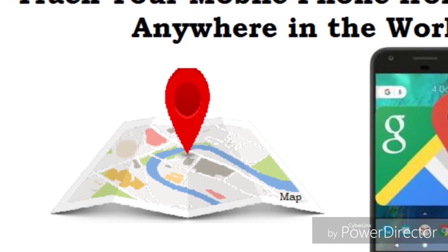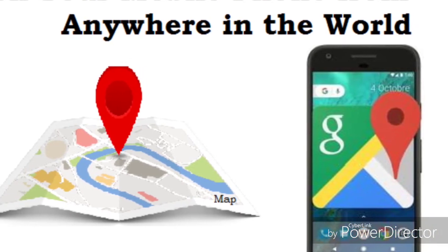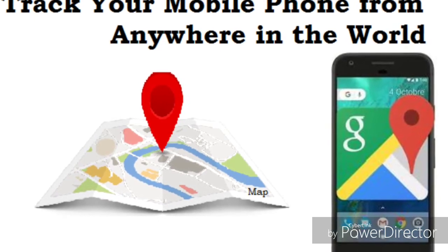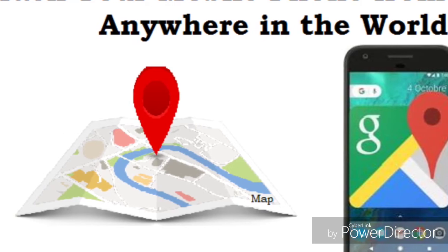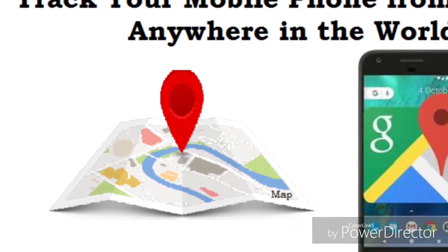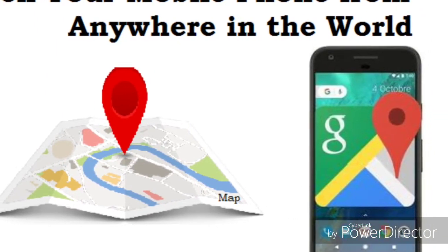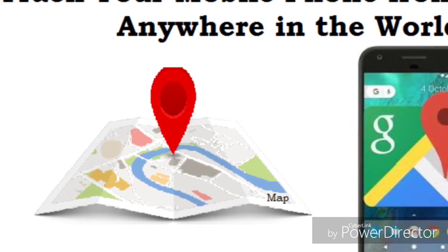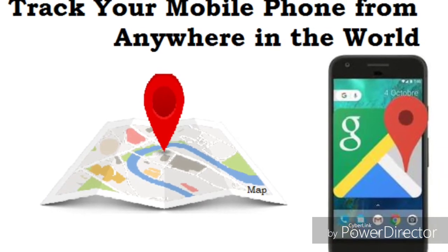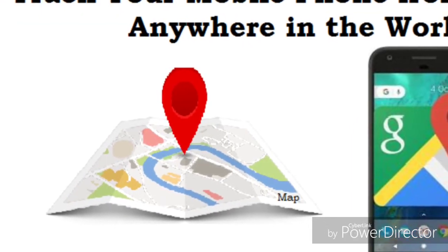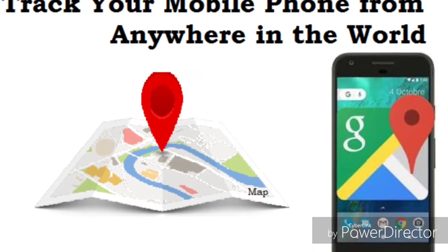Alright, so today's topic is how to track your mobile phone. There are different consequences and scenarios. If your phone is off, there is no way that you can track your mobile phone — absolutely not. The most you can do is go to your nearby police station and make a complaint about it.